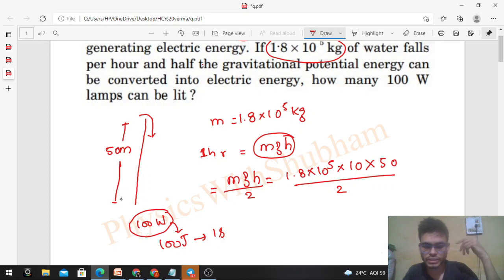So in one hour, how much energy is needed? 100 × 3600, right? One second requires 100 joules, so for one hour you have to multiply it with 3600, that is the number of seconds in one hour. So that much energy is needed.